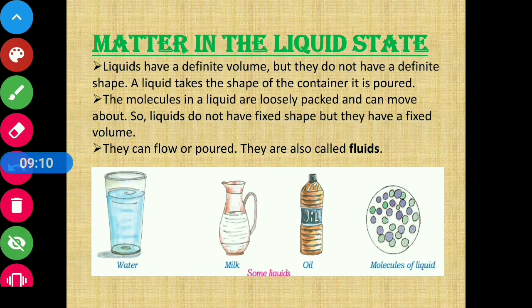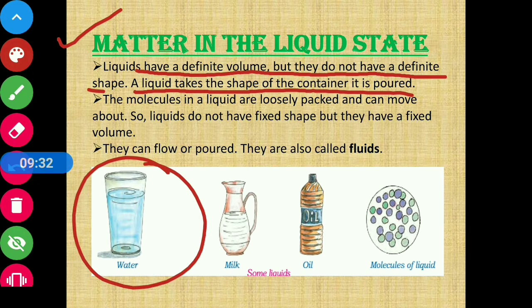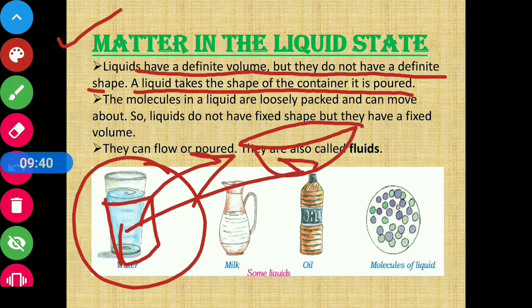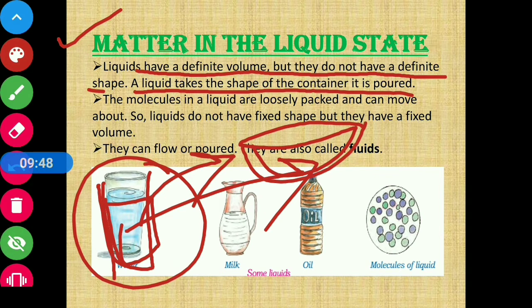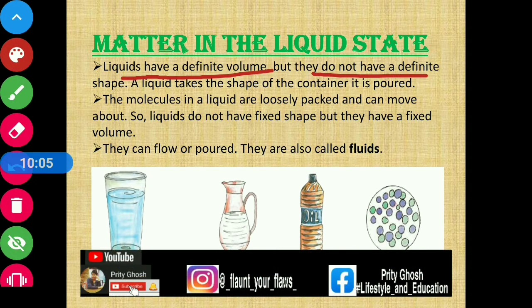Now let us discuss matter in the liquid state. Liquids have a definite volume but they do not have a definite shape. A liquid takes the shape of the container it is poured into. For example, water in a glass — if you pour it into a ball-shaped container, the volume remains the same but the shape changes to match the container. That is why liquids have definite volume but no definite shape. The molecules in liquids are loosely packed and can move about, so liquids do not have a fixed shape but do have a fixed volume.